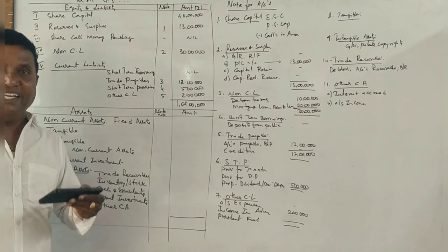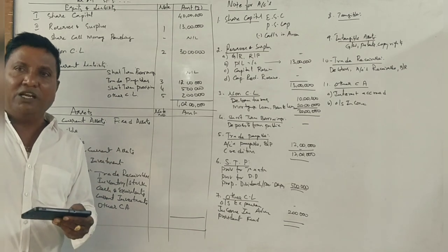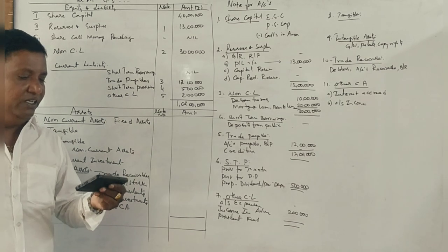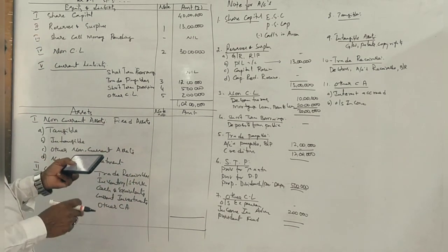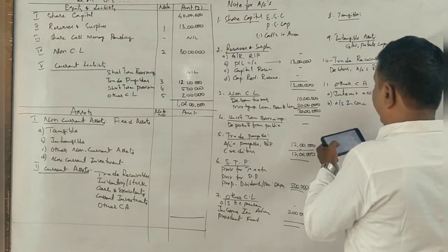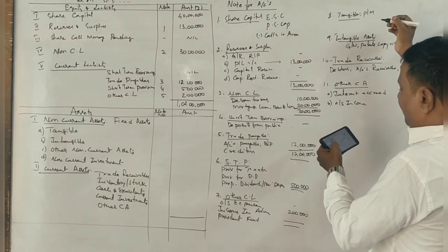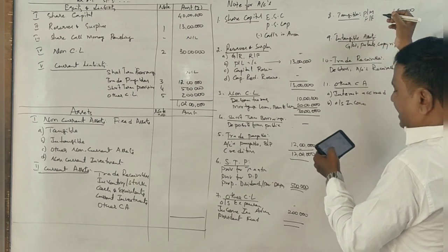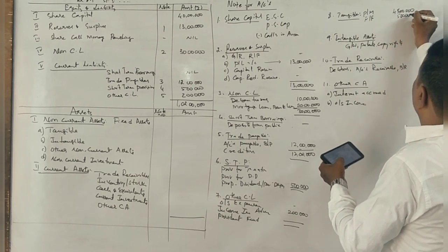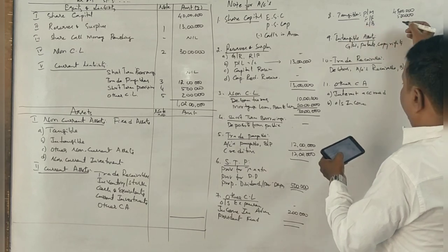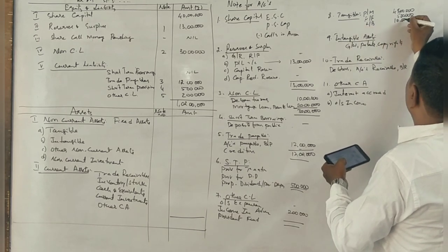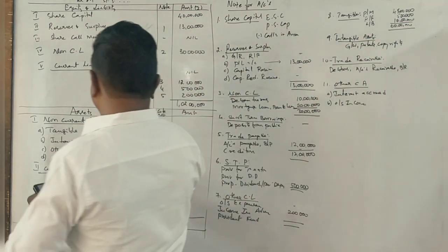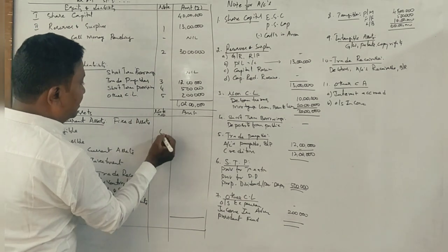Now for the asset side — the debit side amounts will be placed here. First, tangible fixed assets: plant and machinery is 45 lakhs, furniture and fixtures, and land and building is 10 lakhs. The total tangible fixed assets come to 60 lakhs, assigned note number 6.